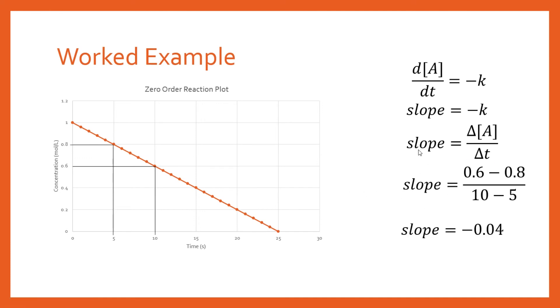Evaluating this gives -0.04. Don't stop here! Since slope equals -k, to get k (the rate constant), multiply by -1. This gives k = 0.04.